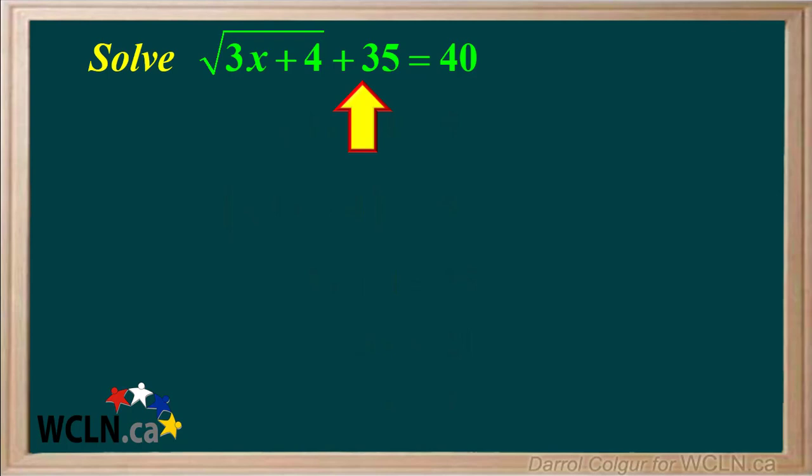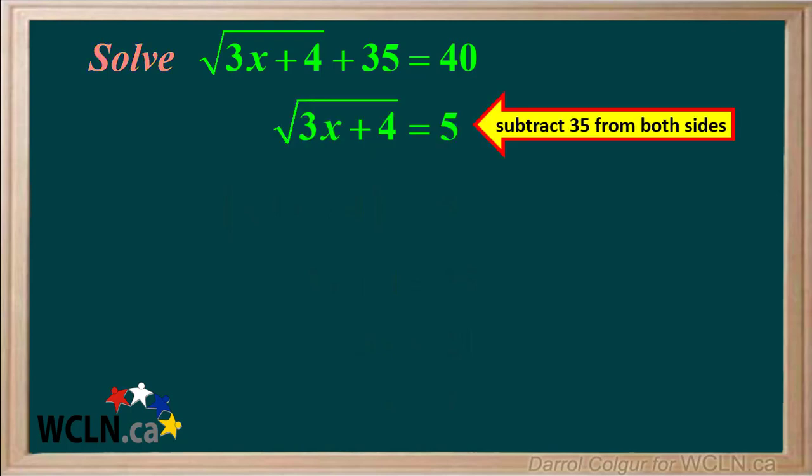The first step is to isolate the radical by subtracting 35 from both sides. Subtracting 35 from both sides of the equation gives us the square root of 3x plus 4 equals 5.